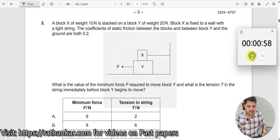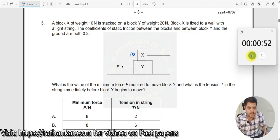Question number 3. Block X of weight 10 Newton is stacked on a block Y of weight 20 Newton. This is of weight 10 Newton, this of weight 20 Newton. Block X is fixed to a wall to a light string, there is a light string.